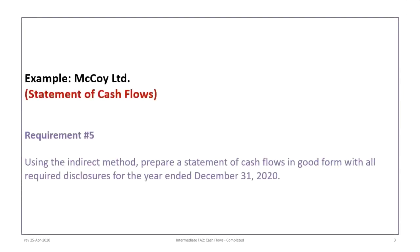This tutorial is still related to the McCoy Limited example. At this point it's presumed that you have reviewed all the previous tutorials. The only thing left in this problem is the last requirement: to use the indirect method to prepare a statement of cash flows in good form with all required disclosures for the year ended December 31st, 2020.